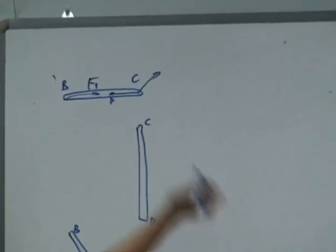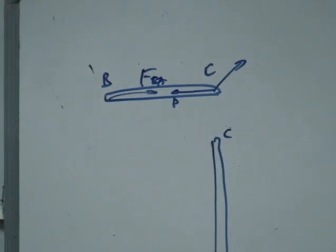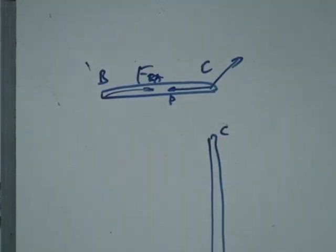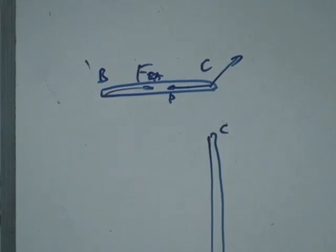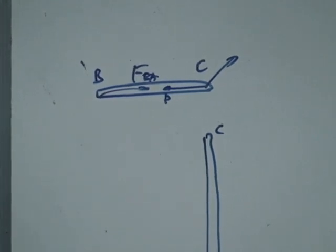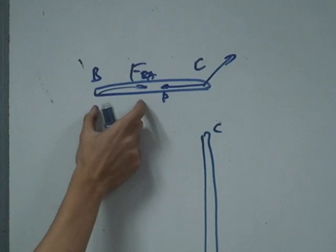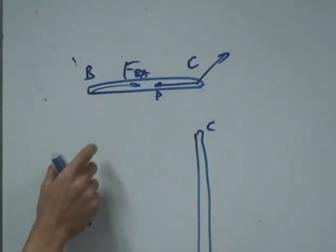Remember this FBA. Correct? Two of them should be in the action and the reaction. This one is the force given by BC to BA. This one is the force given by BA to BC.